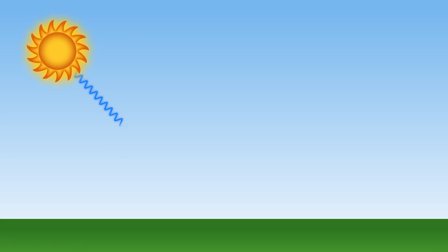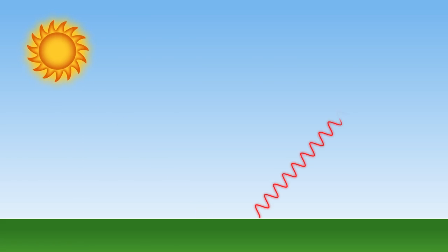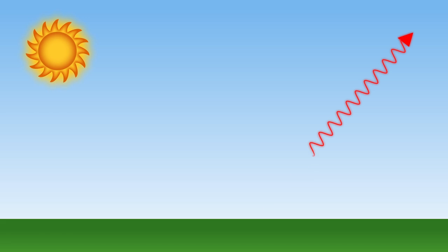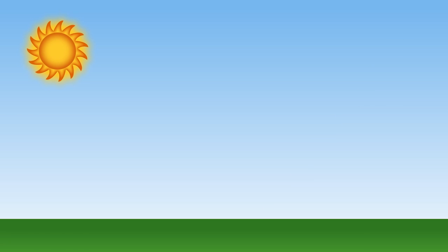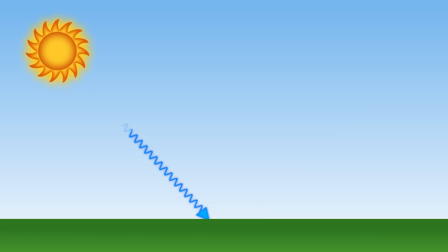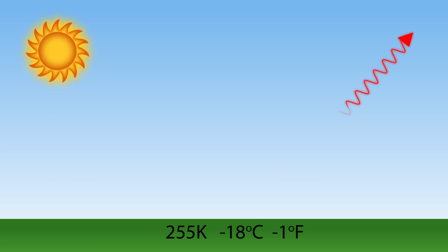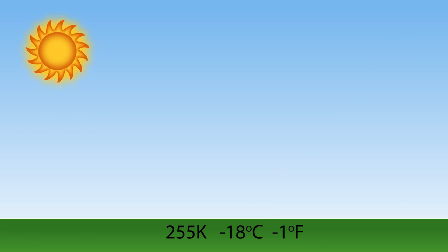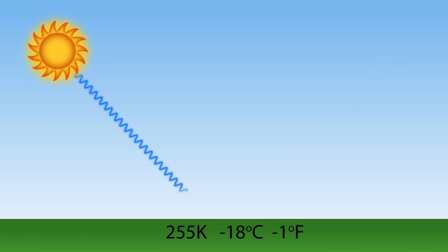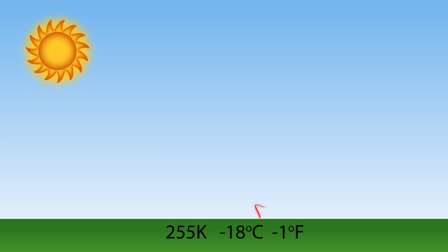That should then dictate what the equilibrium temperature of the Earth actually is. If you stick the numbers in, it turns out that the temperature you get is about 255 Kelvin, which is minus 18 centigrade, which is pretty chilly. So clearly we're missing something.